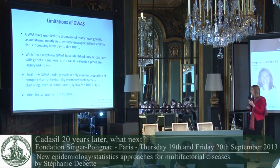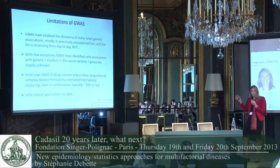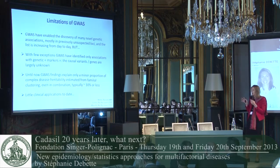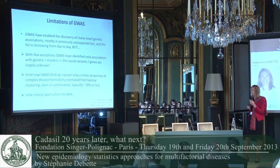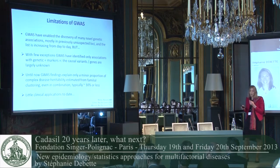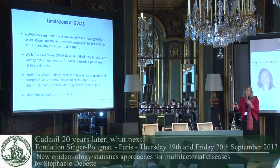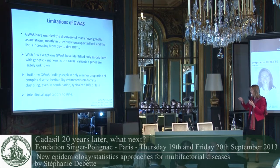The second important limitation is that until now, even in cases where a very large number of genes have been identified, these genes actually explain only a very small proportion of the heritability of the disease as estimated by family studies — typically about 10% or less. And finally, a very strong criticism has been that to date there have been very little clinical applications of these findings.